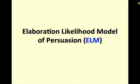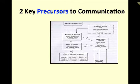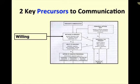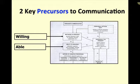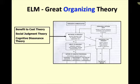We've been using the Elaborational Likelihood Model of Persuasion, ELM, kind of as a framework for looking at theories. If we actually use that model, the first precursor to communication is motivated to process, which I've simply said is willingness to process. The second precursor is ability. If you're going to want to communicate, people have to be willing and able. Under willing, we looked at benefit-to-cost theory. We also looked at social judgment theory.